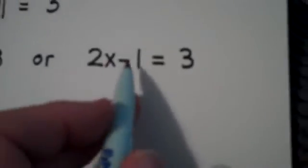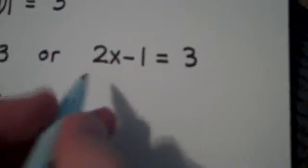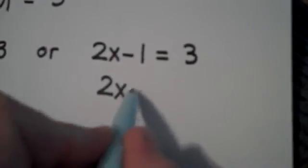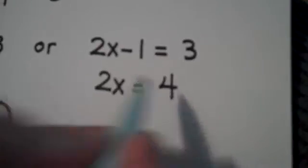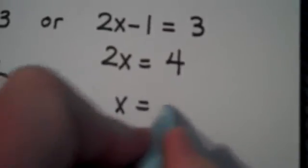In the second case, if 2x minus 1 is 3, 2x is equal to a positive 4, x is equal to 2.